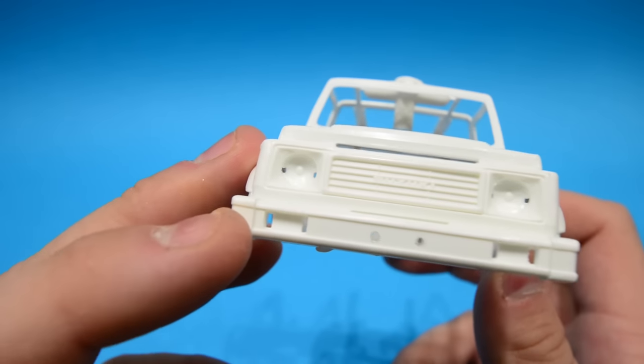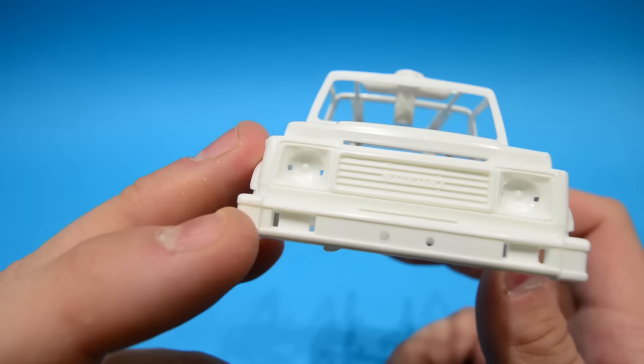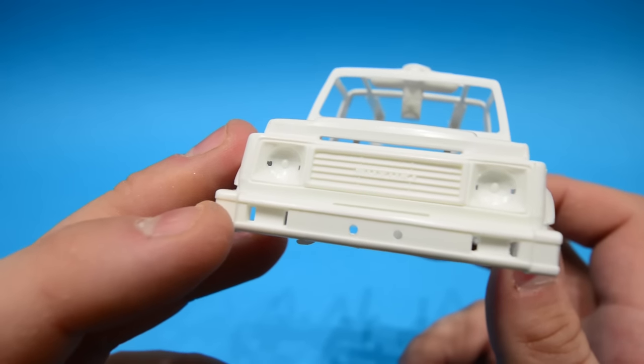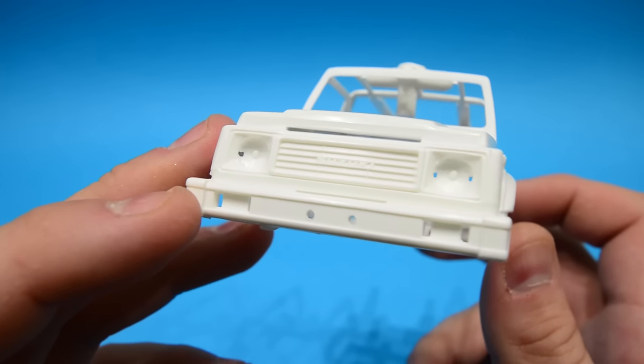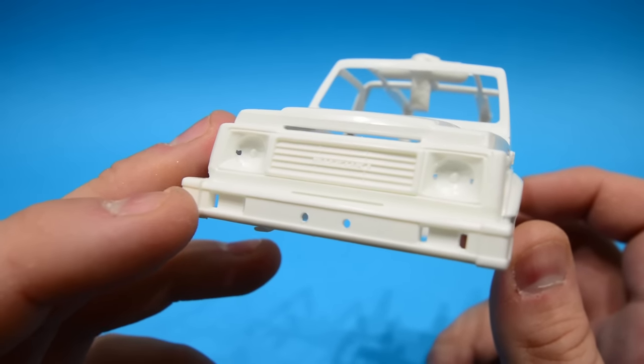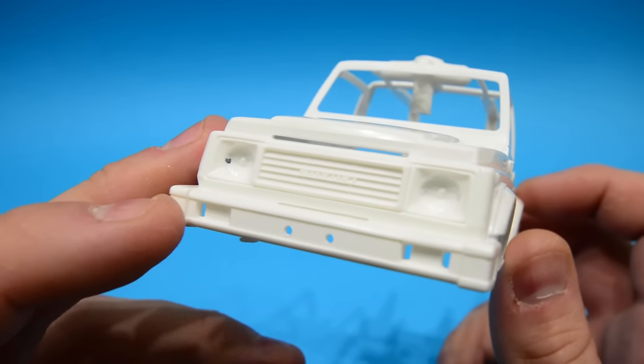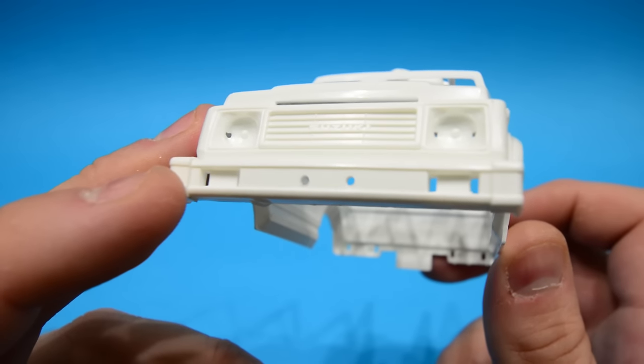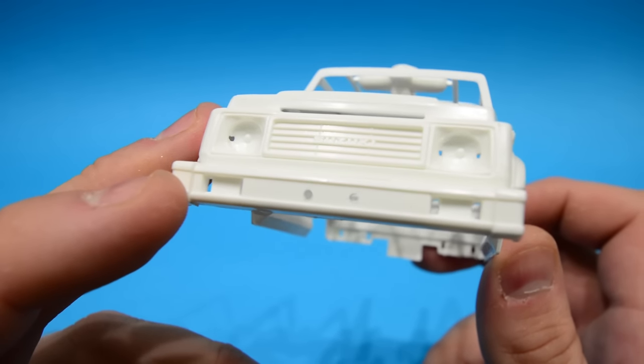You could add some detail to this. You could fill those holes in that the headlights sort of pop into, then snip the bits off the clear parts and glue it in with the usual glue. It would add a little bit of realism, same with these lower portions as well, your indicators.